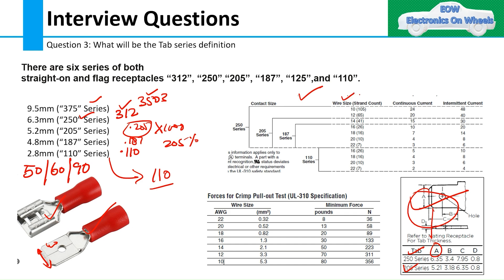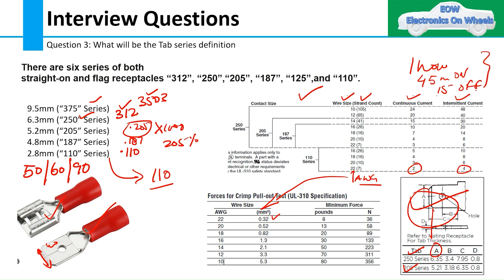Now let's look at the table showing wire side strand count, continuous current, and intermediate current. Intermediate current is also called the transient or inverse current. This table shows what series to use with what wire size — in AWG. For example, 22 AWG is 0.32 square mm. Continuous current and intermediate current are listed — intermediate current is based on a cycle like 45 minutes on, 15 minutes off.